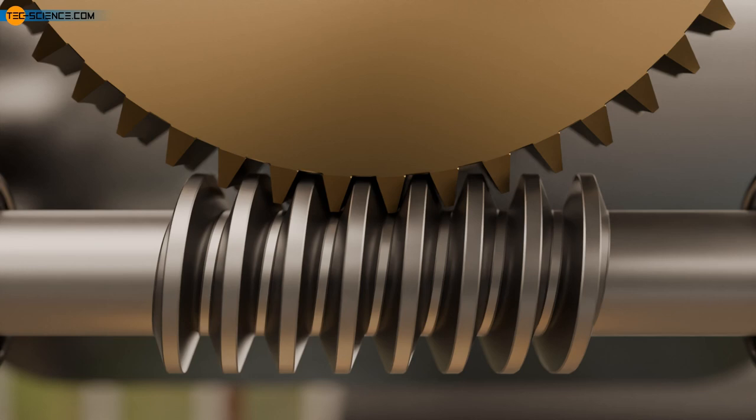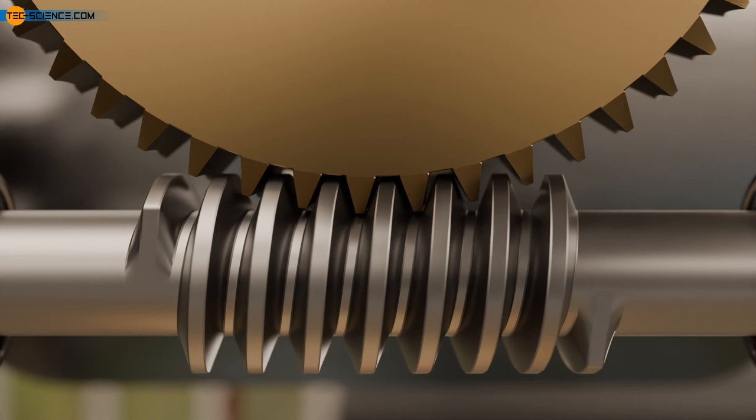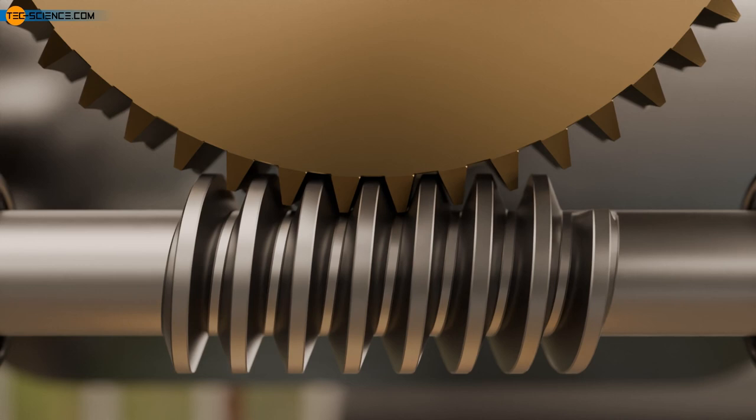Because several sections of the worm are usually meshing with the worm gear at the same time, such gearboxes can handle very high loads, which means that very high power can be transmitted. Due to the constant sliding of the flanks between the worm and the worm wheel, and the necessary lubrication, worm gears are also very quiet.